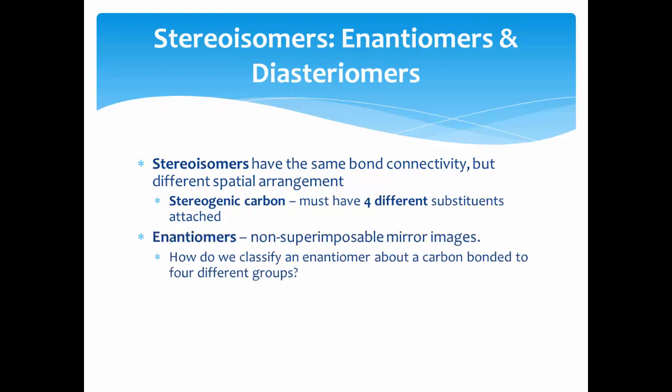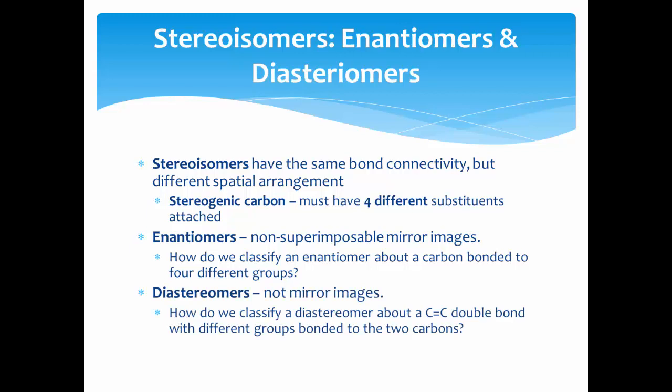There are two types of stereoisomers: enantiomers, which are non-superimposable mirror images, and diastereomers, which are not mirror images at all.